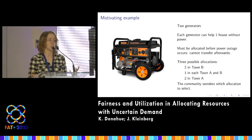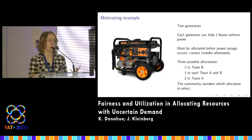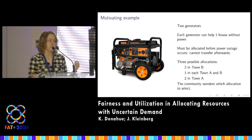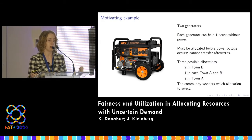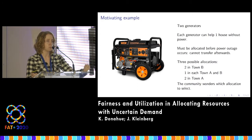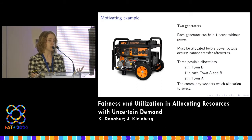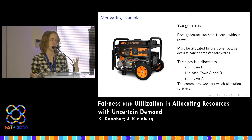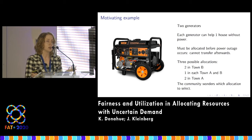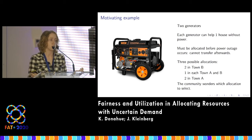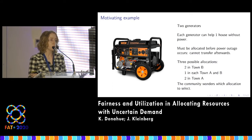You can see this in the probability distributions here — in town B there's a slightly higher chance that houses will have lost power. Luckily the community has some resources: two generators that can each help one house that has lost power. These have to be allocated between the two towns before a power outage occurs and can't be transferred afterwards. So there are three ways to allocate: both in town B, one in each town, or both in town A.